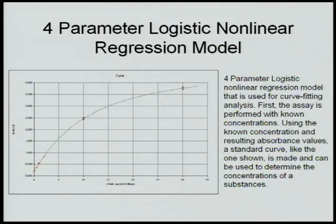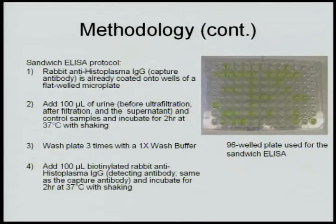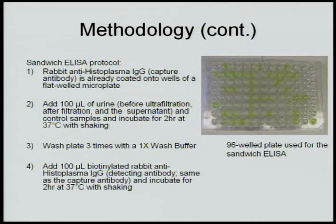First, the assay is performed with known concentrations, and using these values, the concentrations of our substances can be determined. In the sandwich ELISA protocol, the capture antibody is already coated on the wells. After that, 100 microliters of urine — including before ultrafiltration, after ultrafiltration, the supernatant, and our control samples — are added. We incubate this for two hours at 37 degrees Celsius with shaking.